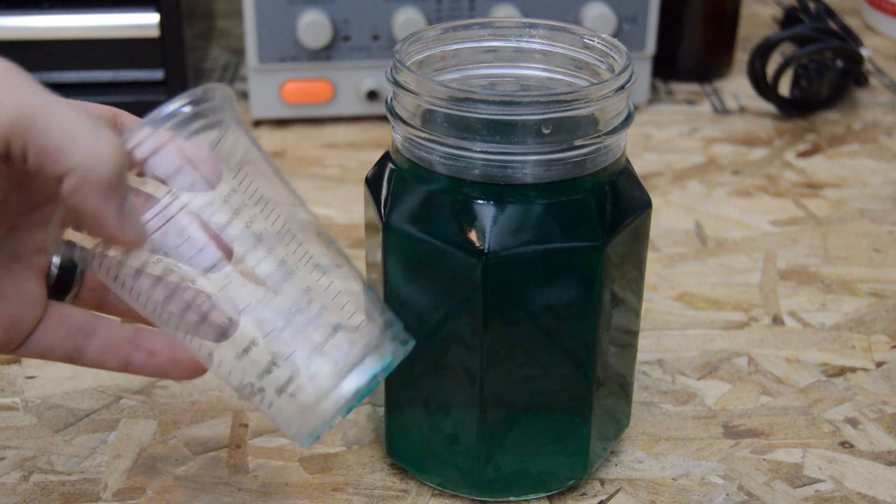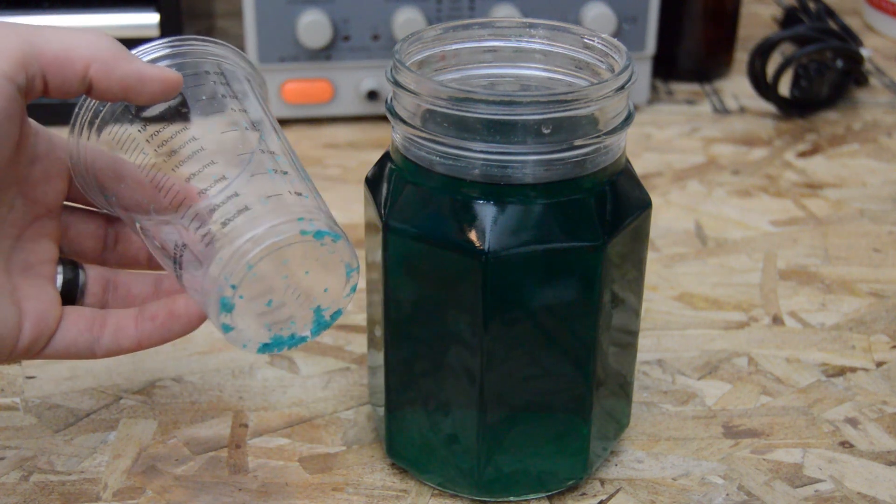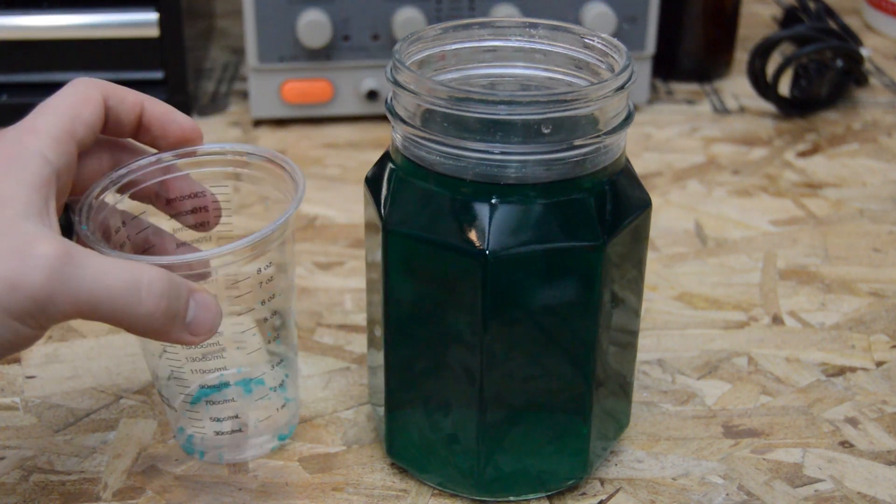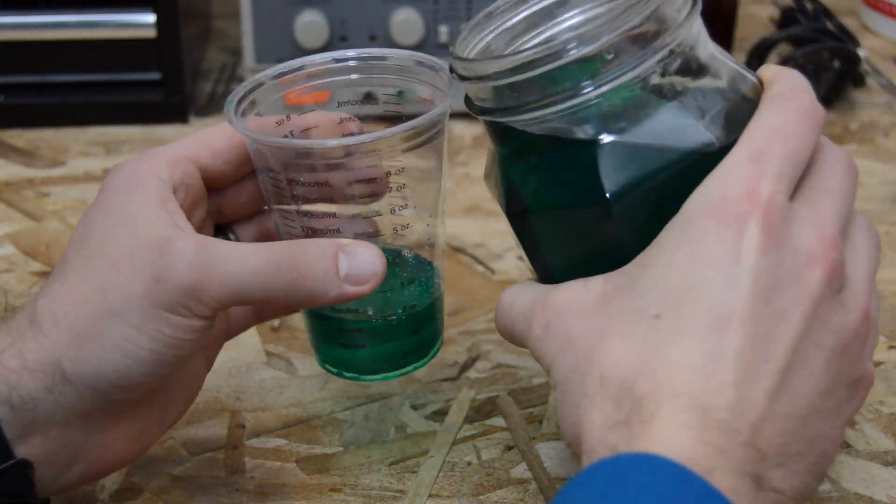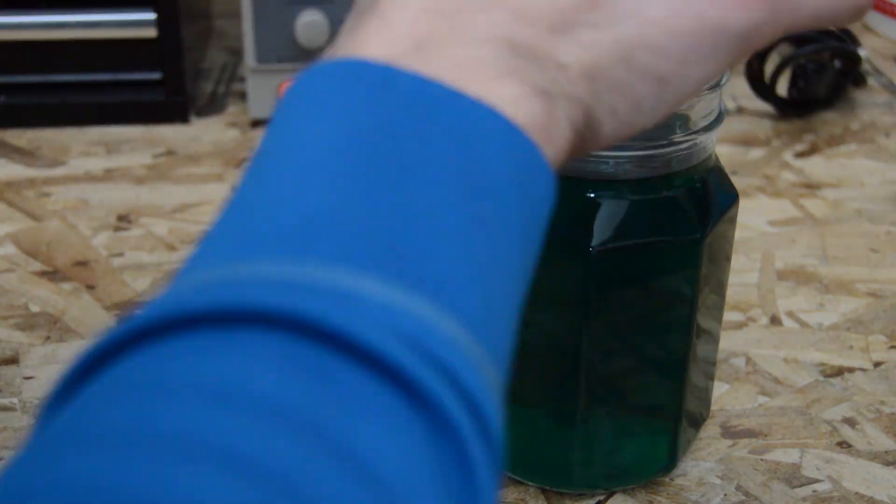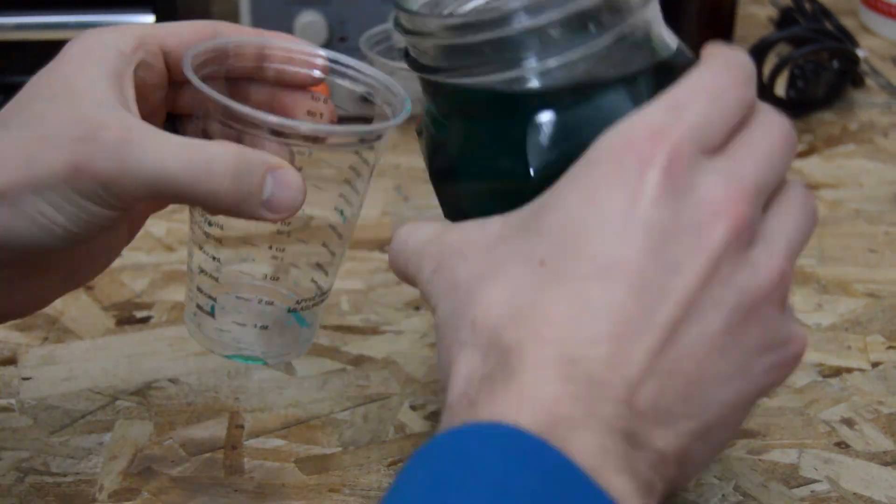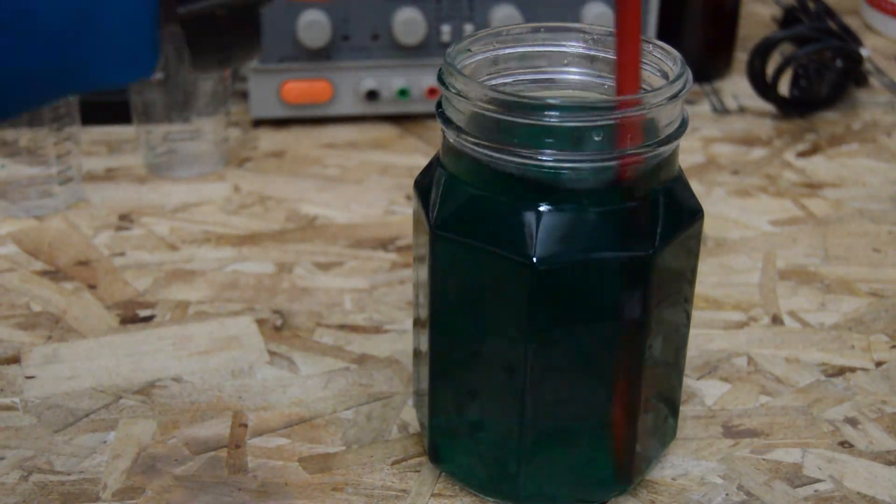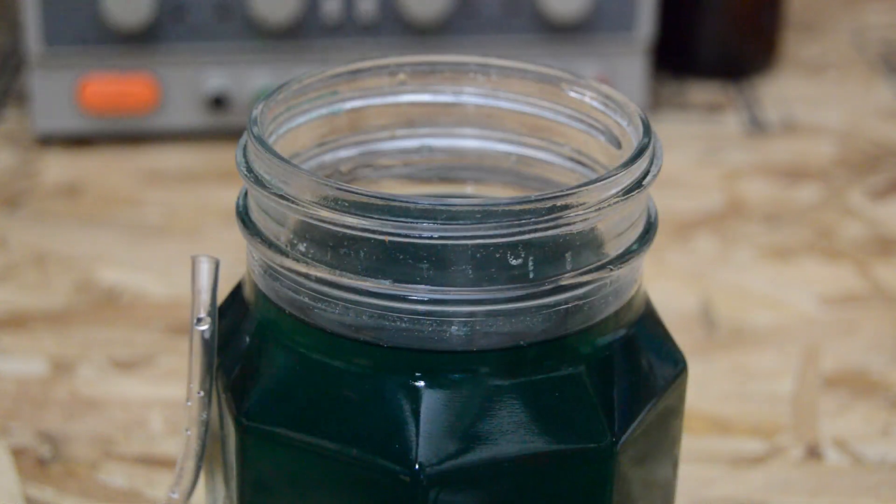Once the solution is cooled, you can use it to rinse the measuring cups and recover the last little bits of chemicals that's stuck to the sides. Just pour a little in each cup and rotate the cup before pouring back into the Mason jar.